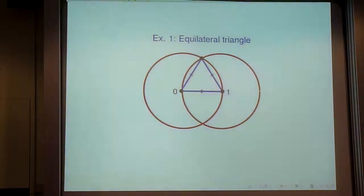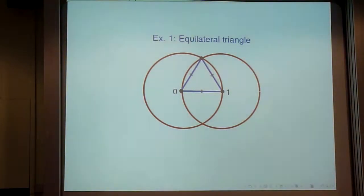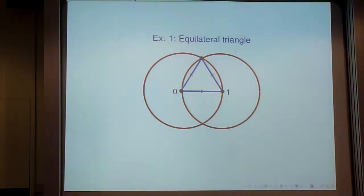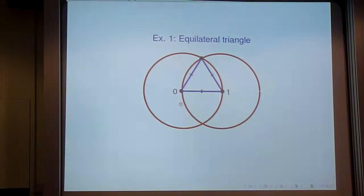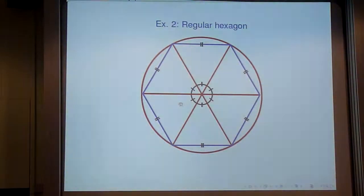The fact that you can construct an equilateral triangle means you can construct an angle of 60 degrees. If you repeat the construction using the top line segment and keep going around the circle, you get a regular hexagon.